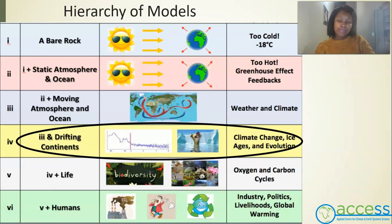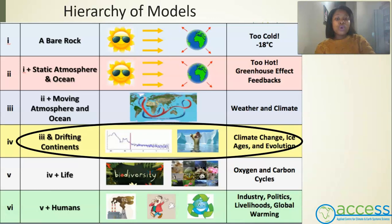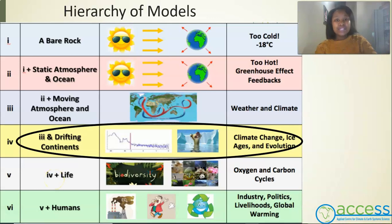What have we learnt before? So far we have learnt about the big bang theory and how everything came into existence. We also learnt that the earth's temperatures are just right for life to exist, and that the earth's distance from the sun is not the reason why the planet is habitable. We also learnt about circulating atmospheres and oceans, and most recently we learnt about models — that all models are wrong but some are useful.